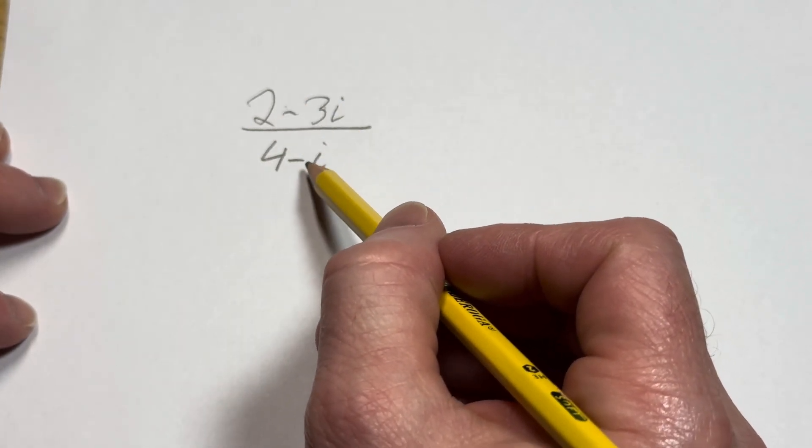Hi, in this video we're going to do a division problem where we divide complex numbers. We have 2 minus 3i divided by 4 minus i.